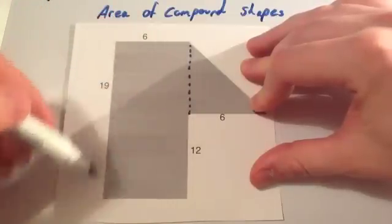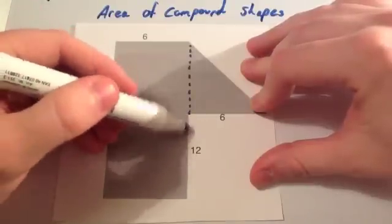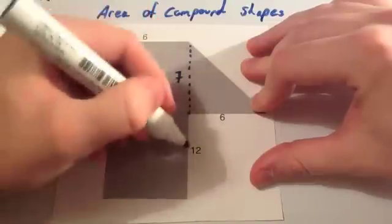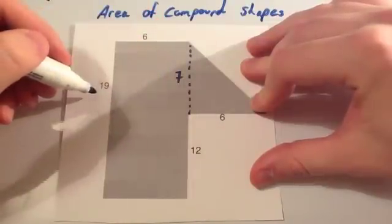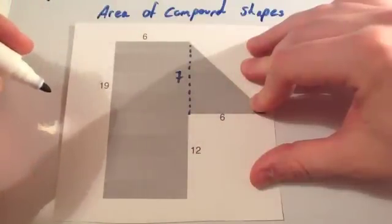The whole length of the rectangle is 19. So the height of this compound shape is 19. And this distance here is 12. So this distance here will have to be 7, because 7 plus 12 will have to be the 19. So we've now got all the measurements we need. Let's find the area of the compound shape.